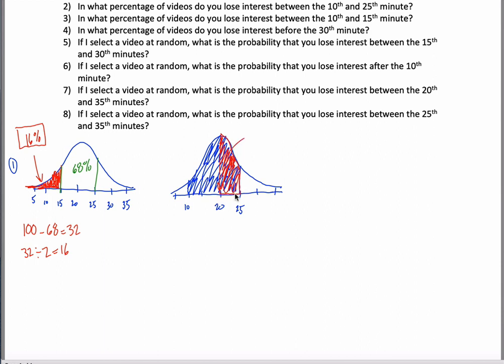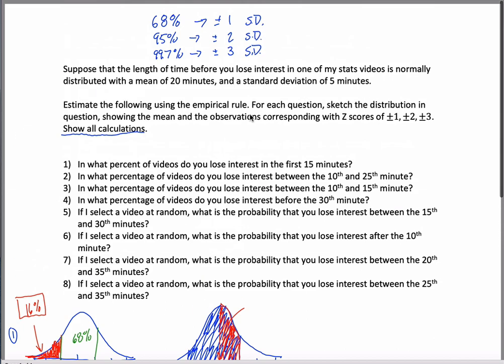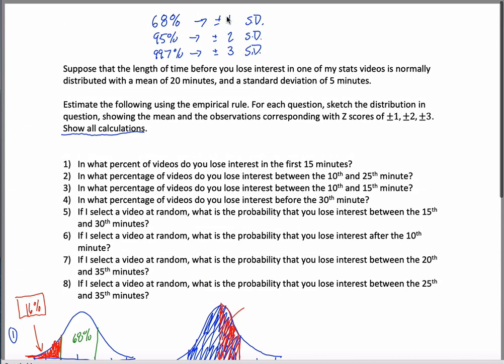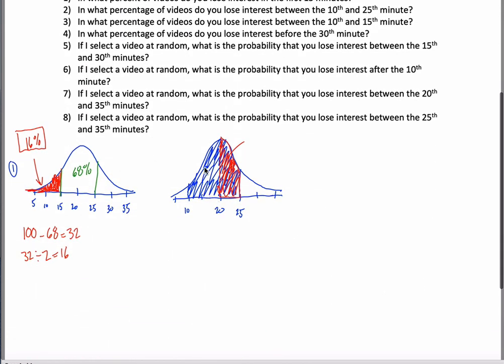How much area is here? Well, if it said 15 to 25, that would be one standard deviation below to one standard deviation above. So I'd have 68% of the data. But it doesn't. It only shows half of that. So this would be 68 divided by 2. In other words, 34%.